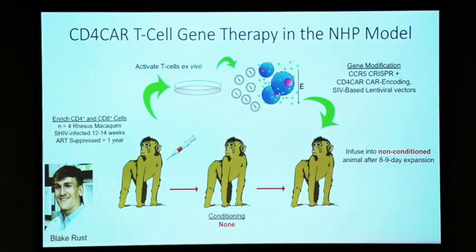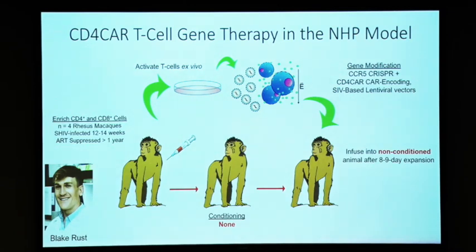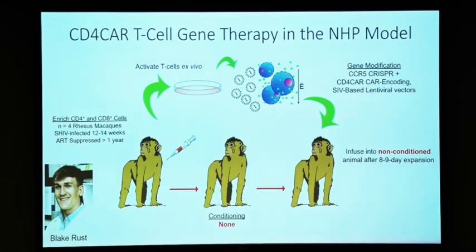After stimulating the cells, we modified them in two steps. The total unactivated cell population was modified with CCR5 CRISPR — the CCR5 editing was before the cells were activated. Then we allowed the cells to activate and modified them with an SIV-based antiviral vector expressing the CD4 CAR molecule. We're using the very same CD4 CAR that Jim just told you about, that he's optimized in his previous studies — codon-optimized for rhesus, but otherwise the same one he's previously published. Importantly, we decided to go with no conditioning regimen in these studies, thinking this would be a more translatable approach in patients.